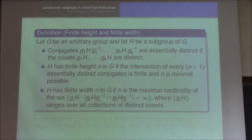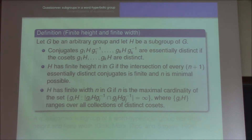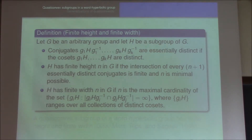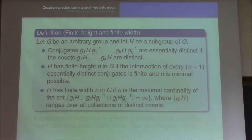To describe one more property, let's recall the definitions of finite height and finite width. Let G be an arbitrary group and let H be a subgroup. We say that K conjugates are essentially distinct if the cosets are distinct. We say a subgroup has finite height N if the intersection of every N+1 essentially distinct conjugates is finite, where N is minimum possible.